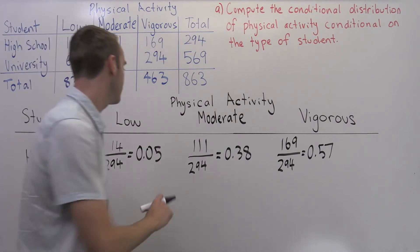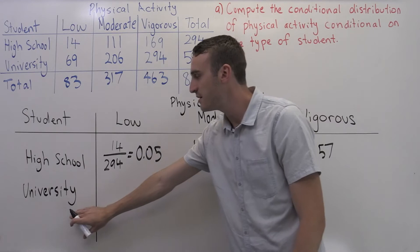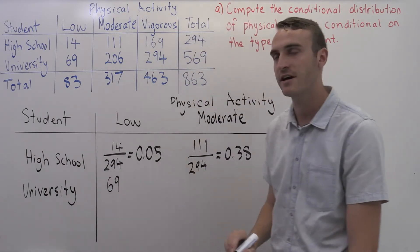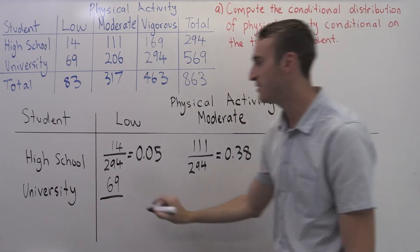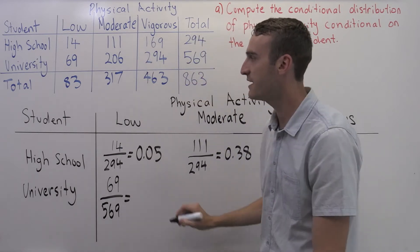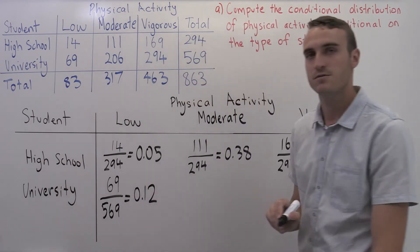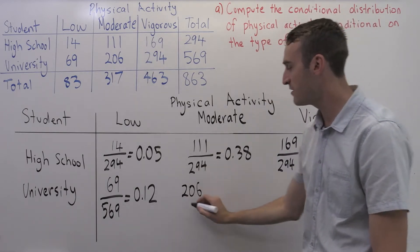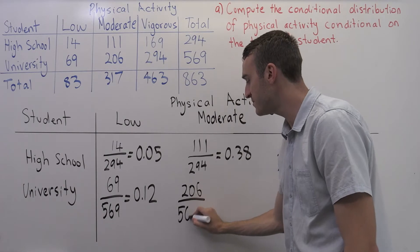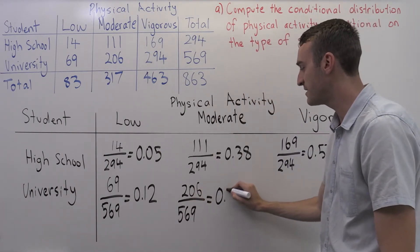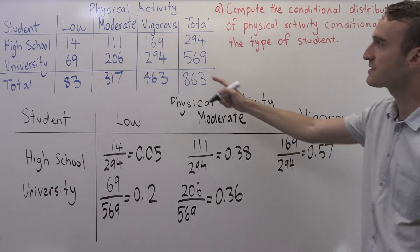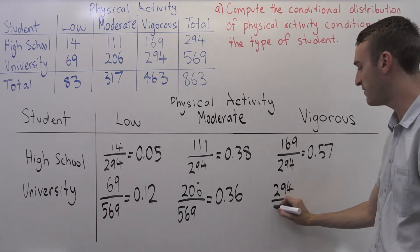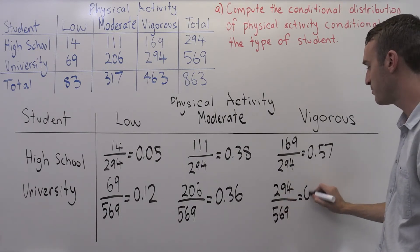Now we move on to the conditional distribution of physical activity given that the student went to university. In the first case we have 69 university students in the low category, and we sampled 569 university students, so we get 12%. For the moderate case, we have 206 university students with moderate levels of physical activity divided by 569 total university students, giving 0.36. In the vigorous case, we had 294 divided by 569, which gives us 0.52.